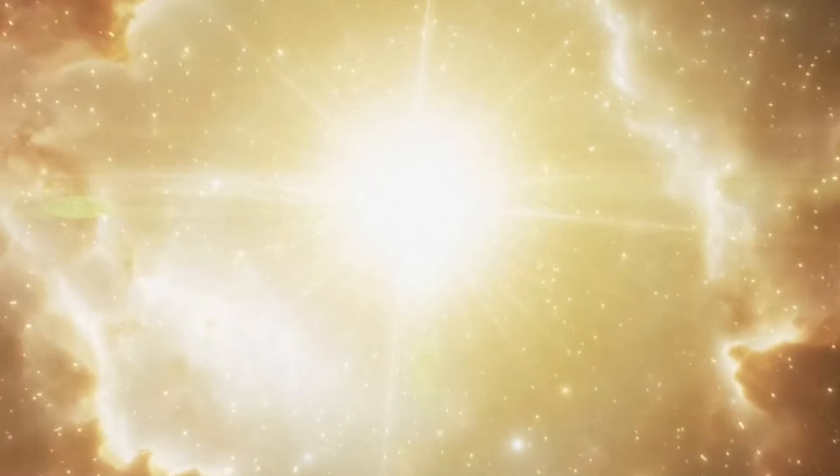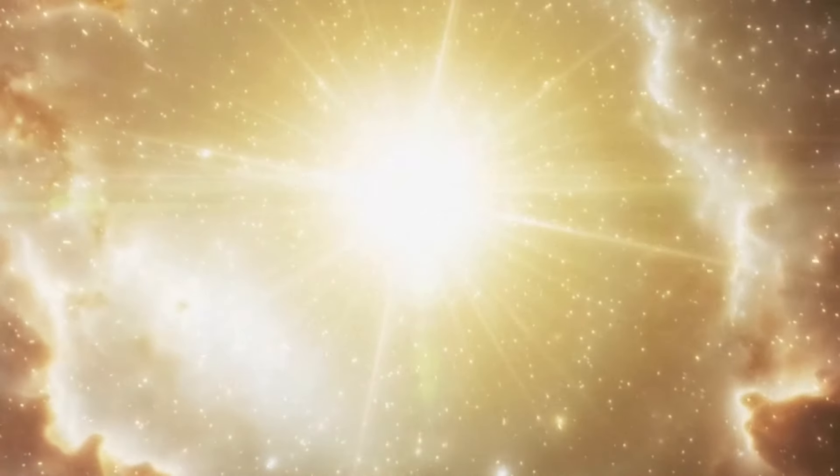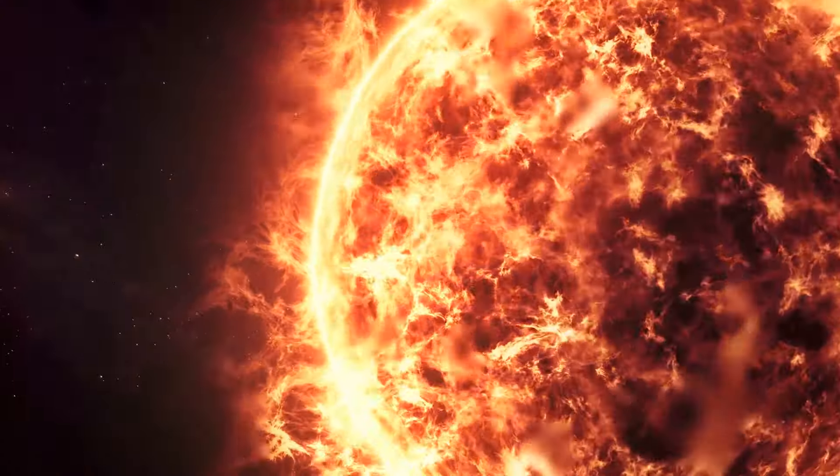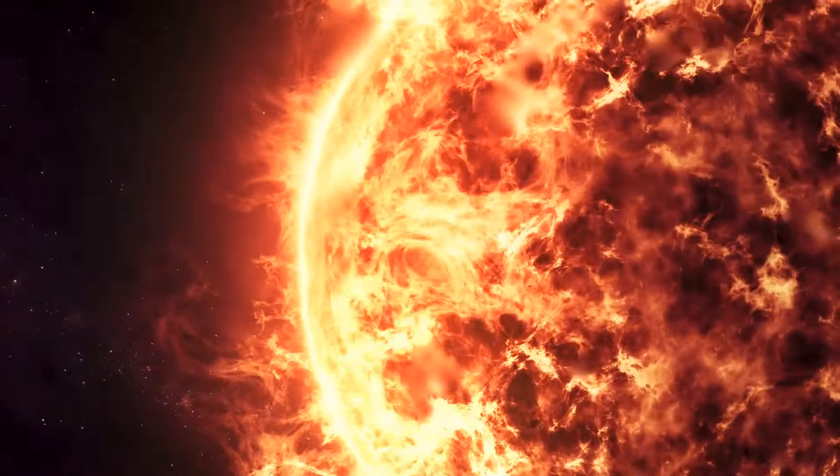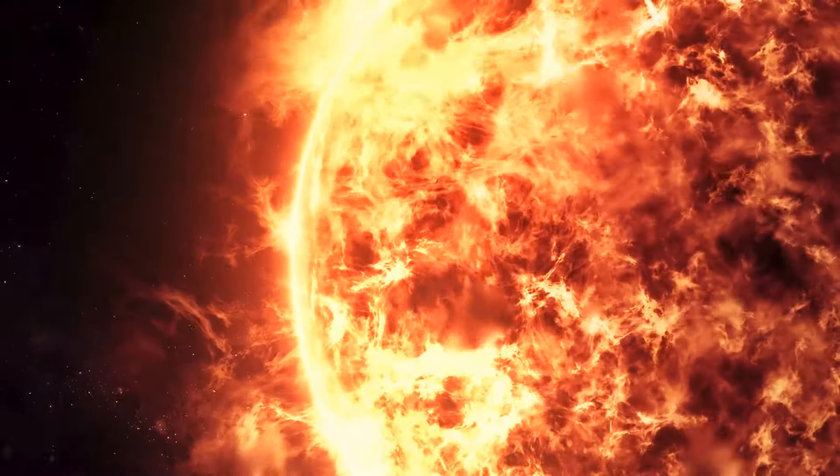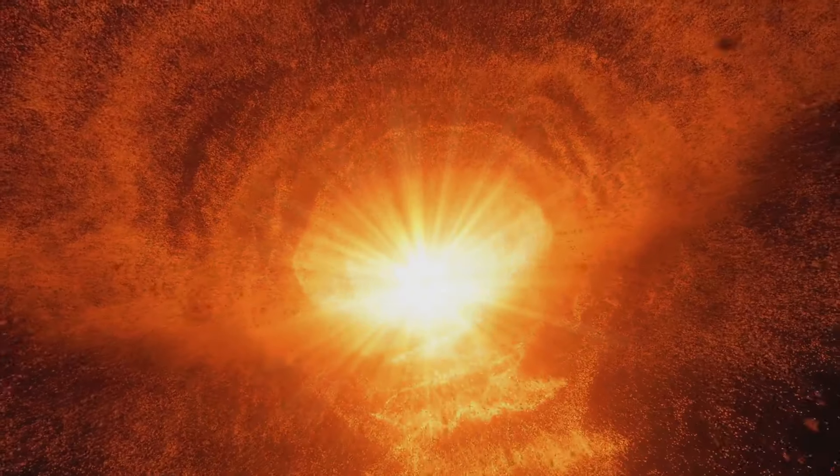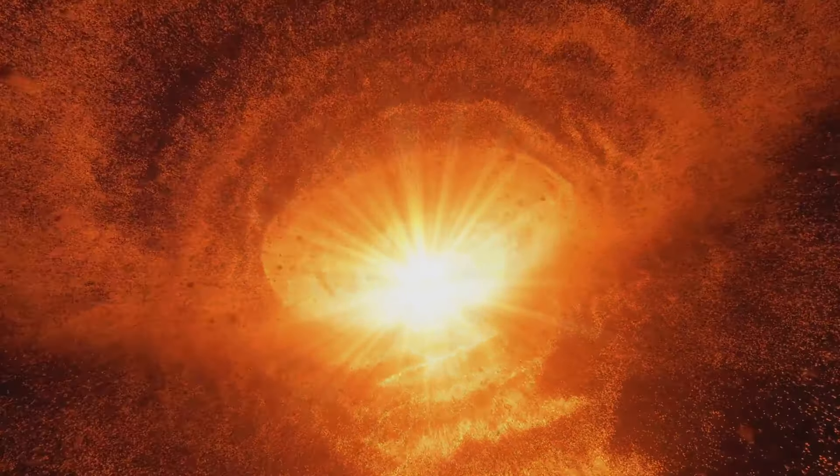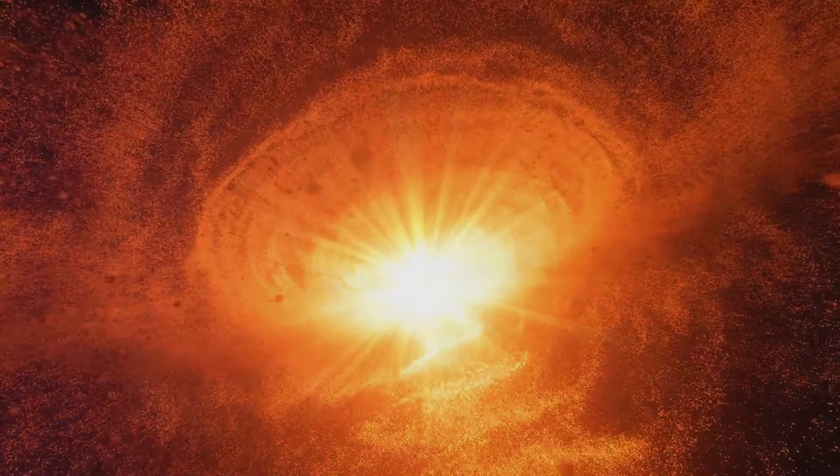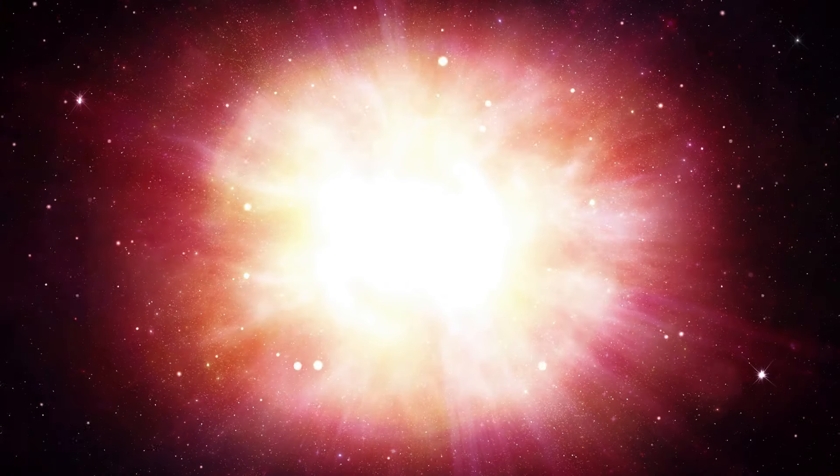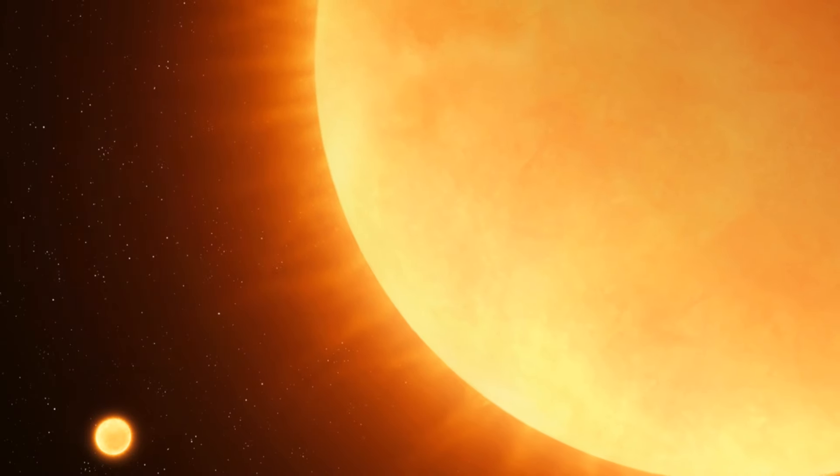Betelgeuse is now in the final stages of its life cycle, its core a cauldron of nuclear reactions, fusing heavier and heavier elements. The star is in a constant balancing act between the inward pull of gravity and the outward pressure from fusion. It is only about 10 million years old and the clock is ticking. In the fusion reactions in its core, the outward pressure that has kept the star stable will give way to the relentless inward pull of gravity. But when exactly will this happen?